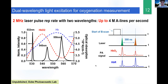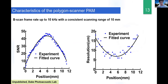Because the system is so fast, we have to sacrifice the depth range to accommodate that speed. We quantify the imaging performance: a scanning range of about 10 millimeters, achieving about 10 kilohertz 2D cross-sectional scanning. Sensitivity across the field of view and resolution are roughly consistent, which is very important — we do not want to sacrifice either sensitivity or resolution across this wide field of view.